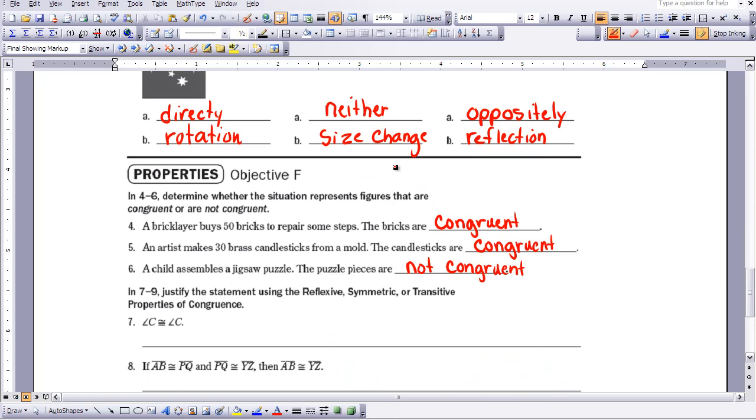As we look at 4 through 6, we want to determine if the figures are congruent or not congruent in these situations. If a bricklayer buys 50 bricks to repair some bricks, the bricks would need to be congruent. He's buying the same size and shape brick. An artist makes 30 brass candlesticks from a mold. The candlesticks would then be congruent because all the candlesticks are being made out of the same mold. Now let's look at number 6. A child assembles a jigsaw puzzle. We know that all the pieces of the jigsaw puzzle fit very nicely together. However, each puzzle piece is not the same exact size or the same shape, so we would say that they are not congruent.